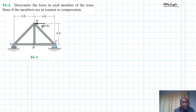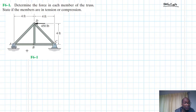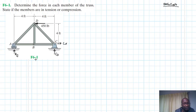We have a roller support at A and a hinge support at C, and a single concentrated point load at joint D. Let's begin. First things first, we draw the free body diagram. We have a vertical reaction Ay at A, and two reactions Cy and Cx at C.